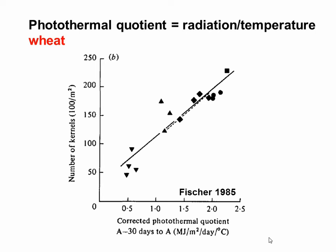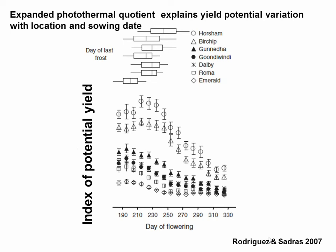Tony Fisher also put forward the idea that kernel number is related to the ratio of radiation to temperature. High radiation gives more yield because of more photosynthesis, but high temperature shortens the time when the crop is producing grain, which is why high temperature reduces yield potential. This explains why early sowing gives higher yield potential — along a transect from Horsham to Emerald, late flowering corresponds to a drop in yield potential, because the radiation-to-temperature ratio is unfavourable. Whenever possible, early flowering will give you the highest yield potential.